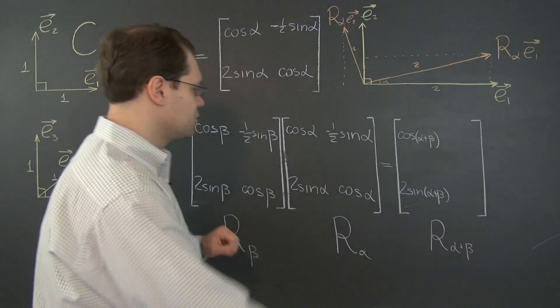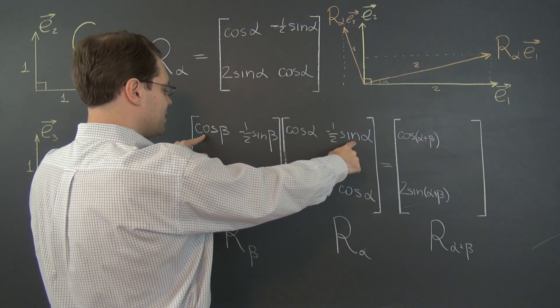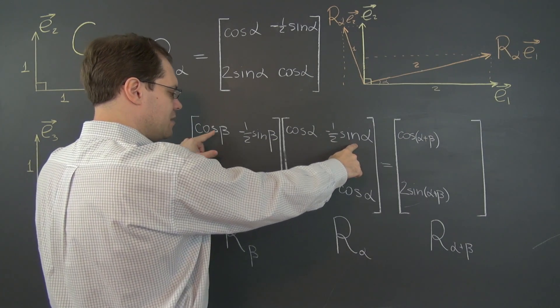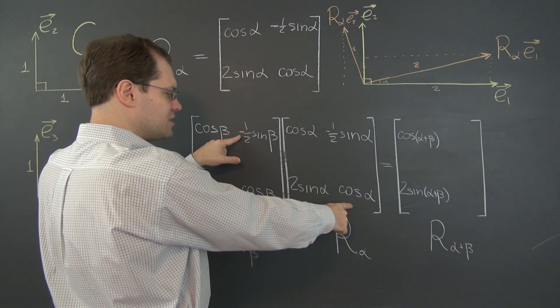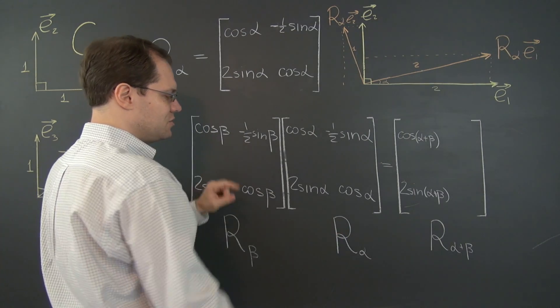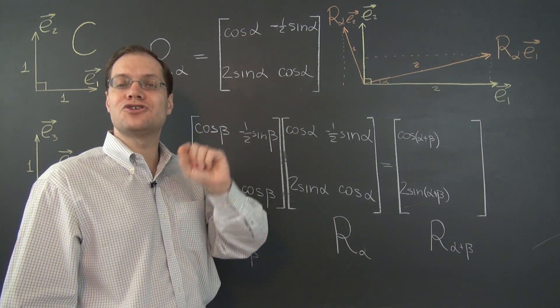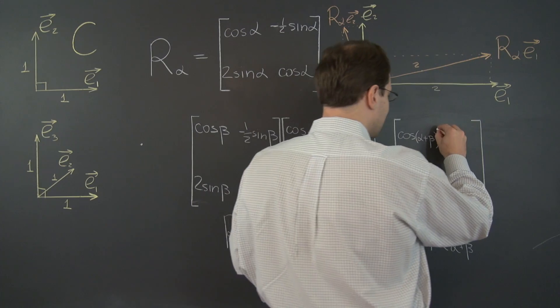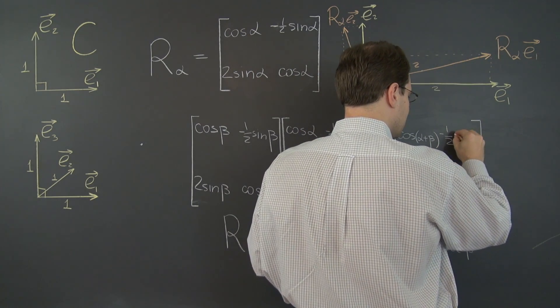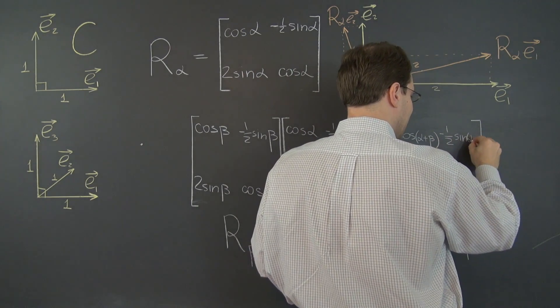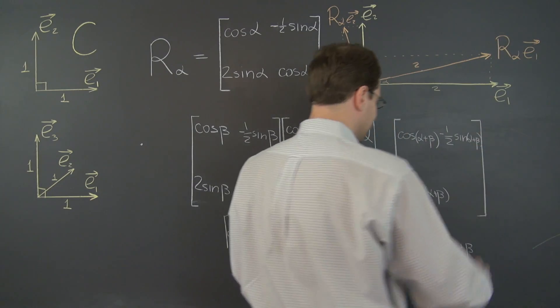Let's work out this one. We have minus 1 half sine alpha cosine beta minus 1 half cosine alpha sine beta. So exactly minus 1 half, each term had minus 1 half. So we have minus 1 half sine of alpha plus beta. Perfectly.